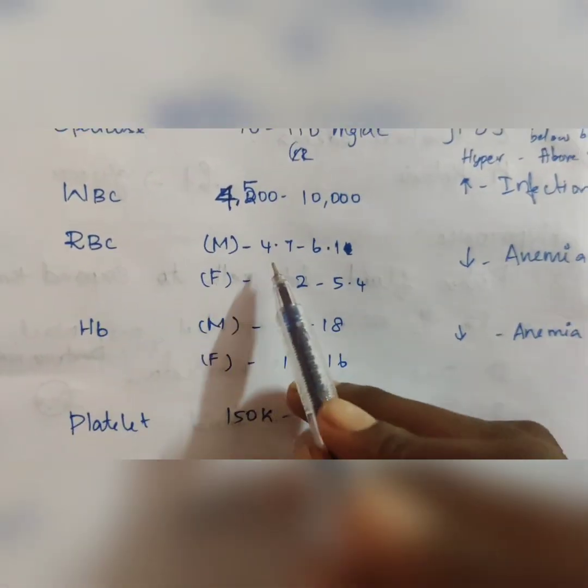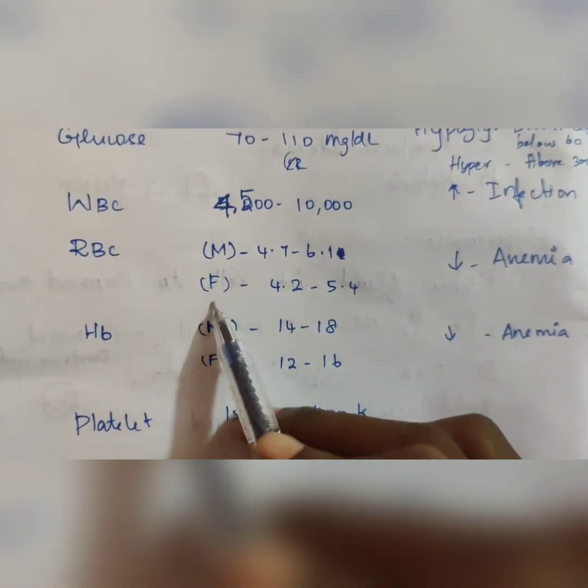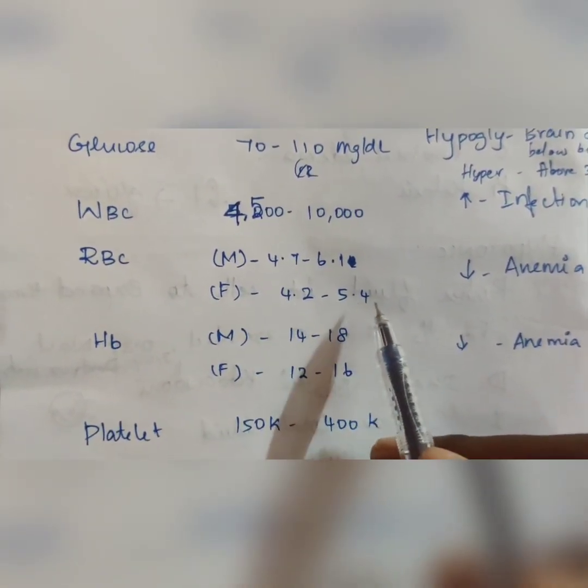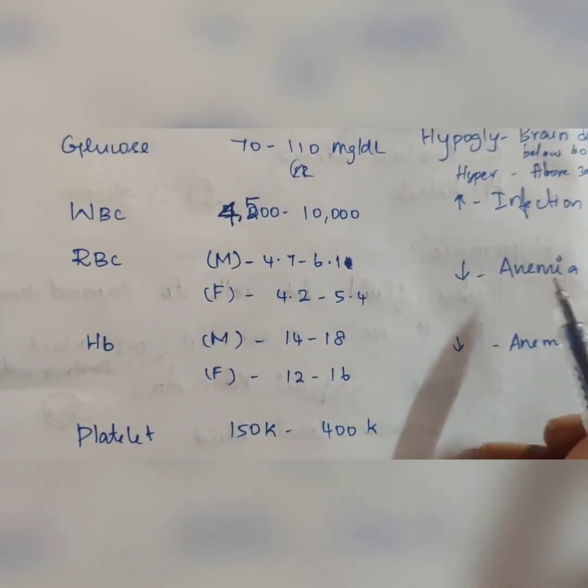Next, RBC for males 4.7 to 6.1. For females, 4.2 to 5.4. In case decreased RBC indicates anemia.